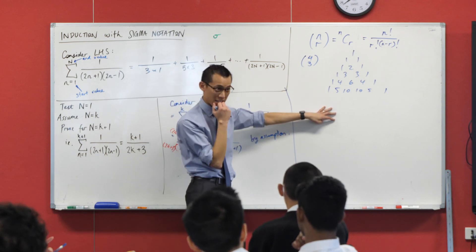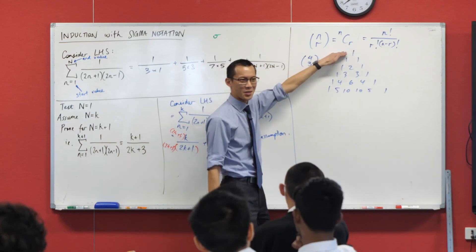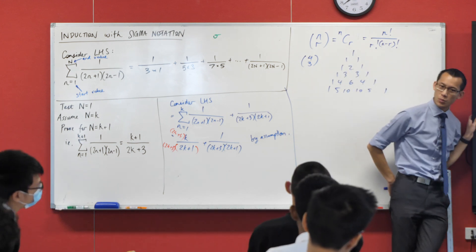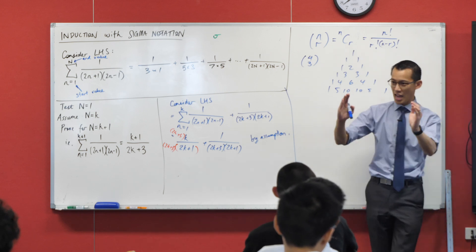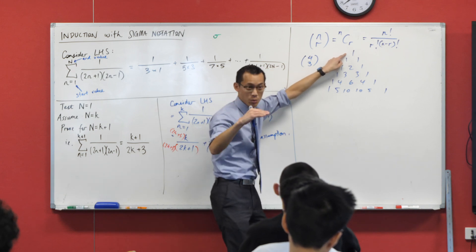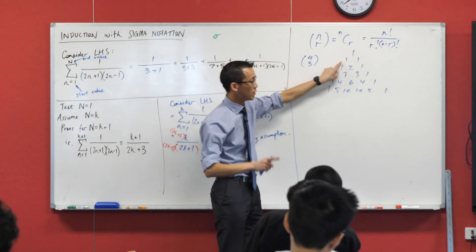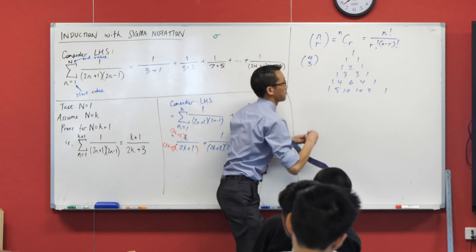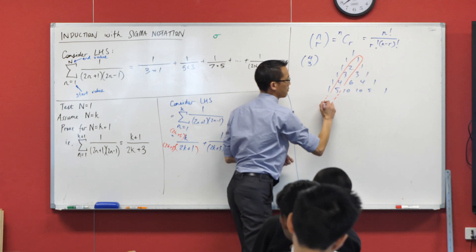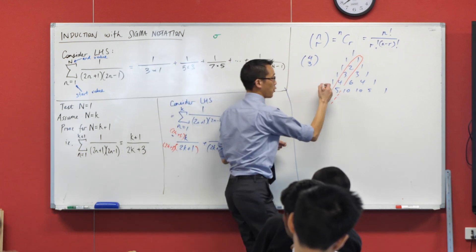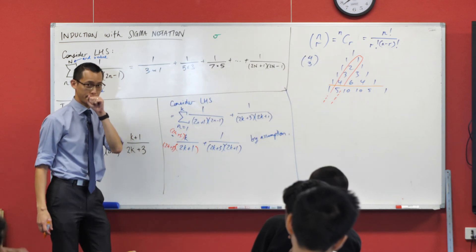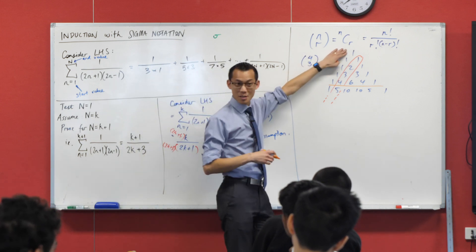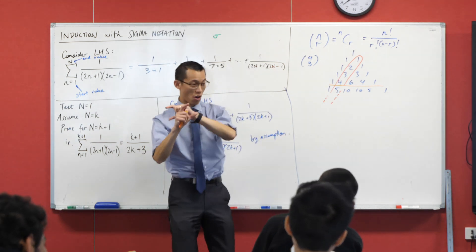So 4C3 — what does it mean when we go down to the fourth row, which one is that? It's a bit weird: we call the very top row the zeroth row. The reason we call it the zeroth row makes sense because of the binomial theorem — think about what happens when n equals zero: x plus a raised to the power of zero gives you one. Then the first row corresponds to x plus a to the power of one, and so on. The fourth row is right here — so which term is 4C3? Look carefully — these entries on the left are in position zero.